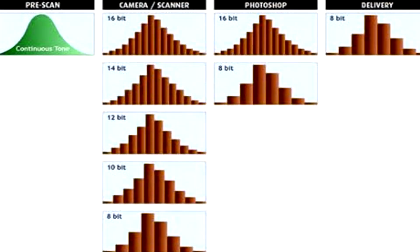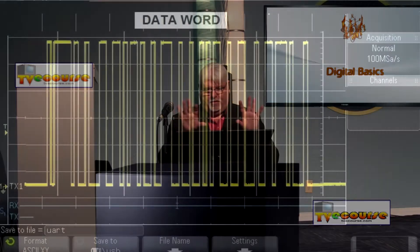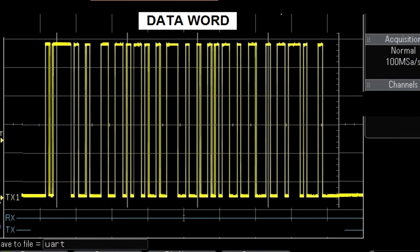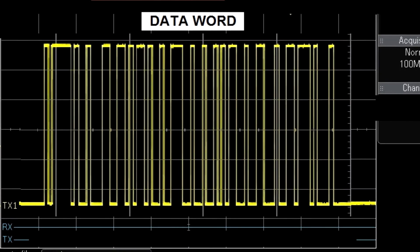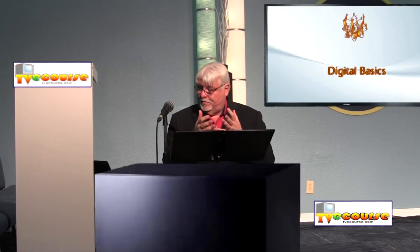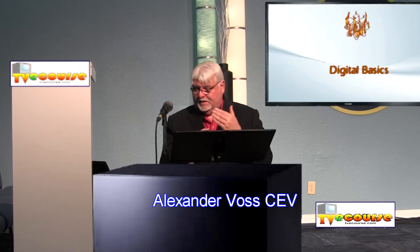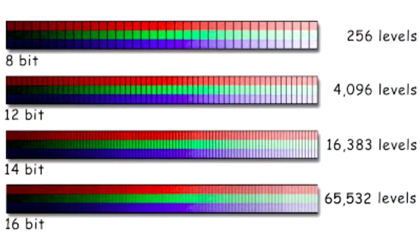Bit depth is the number of levels that a pixel might have. You might have a data word, a data byte — a grouping of bits that forms a digital signal. In television, we talk about bit depth, such as 256 levels with an eight-bit depth, or 1024 levels with a ten-bit depth. Those are examples of how we express bit depth.